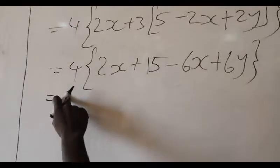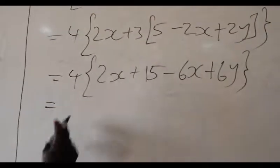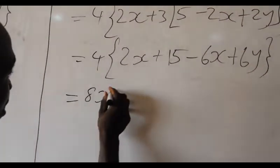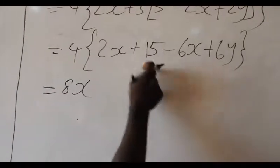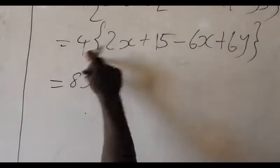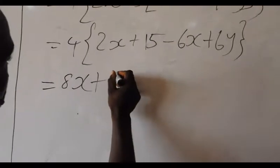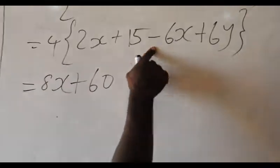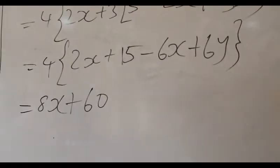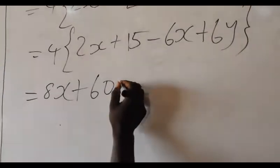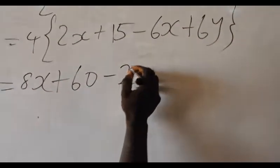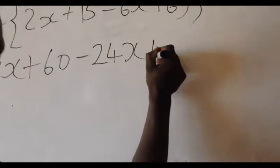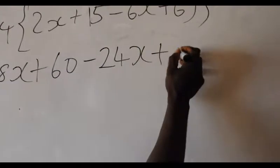Next, let's multiply 4 by all of these terms. So 4 times 2X — that is, 4 times 3X — equals 8X. Then 4 times 15 equals 60. Then 4 times 6X equals minus 24X. And 4 times 6Y equals 24Y.